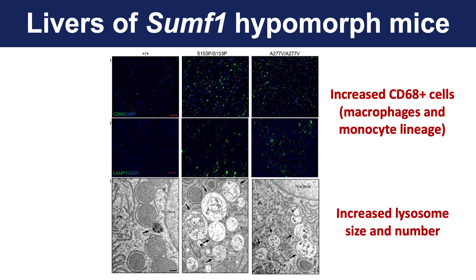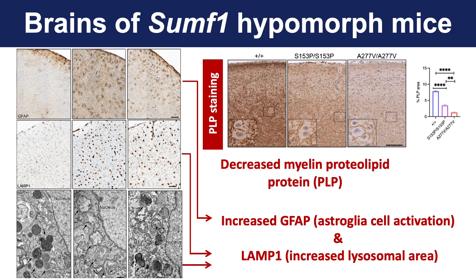Looking at the brain, we could see an increase in GFAP staining, suggesting astroglial cell activation, and an increase in LAMP1, shown by immunohistochemistry and electron microscopy, indicating an increase in lysosomal area. Importantly, there was a decrease in the myelin proteolipid protein PLP in these mice, suggesting that these mice have white matter abnormalities that recapitulate the abnormality seen in patients.